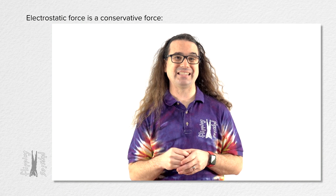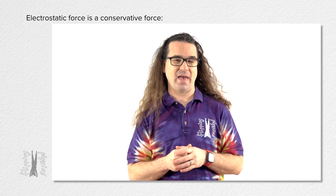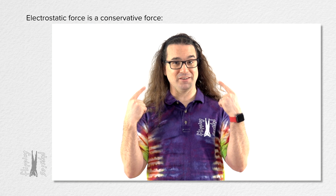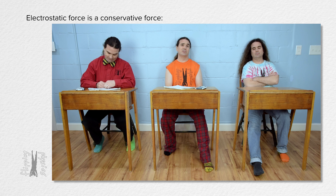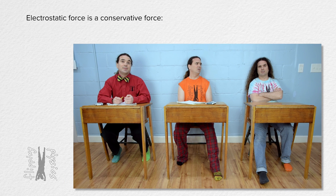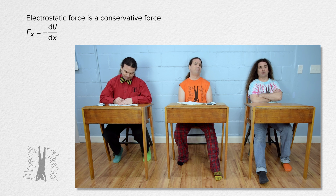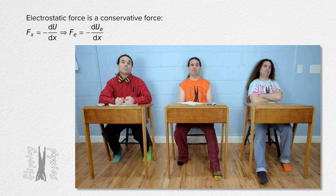Where we start is by pointing out that the electrostatic force is a conservative force. What equation should immediately leap into your brain when you say that? The equation is: the force in the x direction equals the negative of the derivative with respect to x position of the potential energy associated with that force. That means the electrostatic force equals the negative of the derivative of electric potential energy with respect to position.